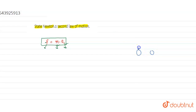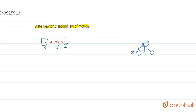So suppose this is your bicycle — there are pedals, this is the seat, and you are sitting here. Your bicycle has mass m.